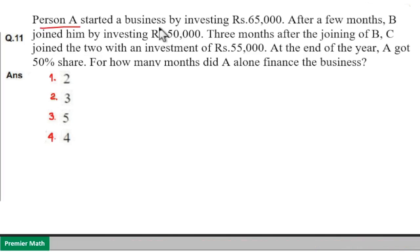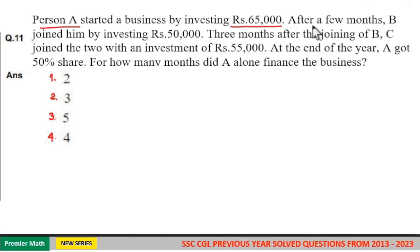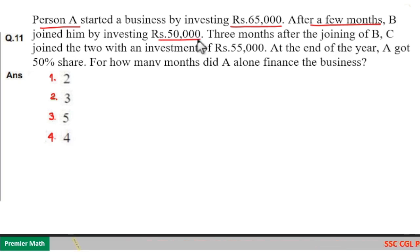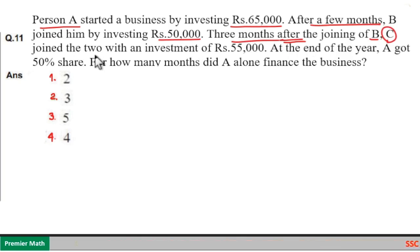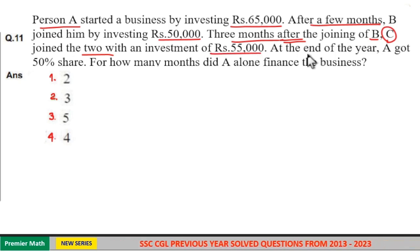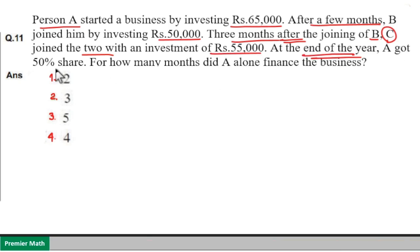Person A started a business by investing Rs. 65,000. After a few months, B joined by investing Rs. 50,000. Three months after B joined, C joined with an investment of Rs. 55,000. At the end of the year, A got a 50% share.